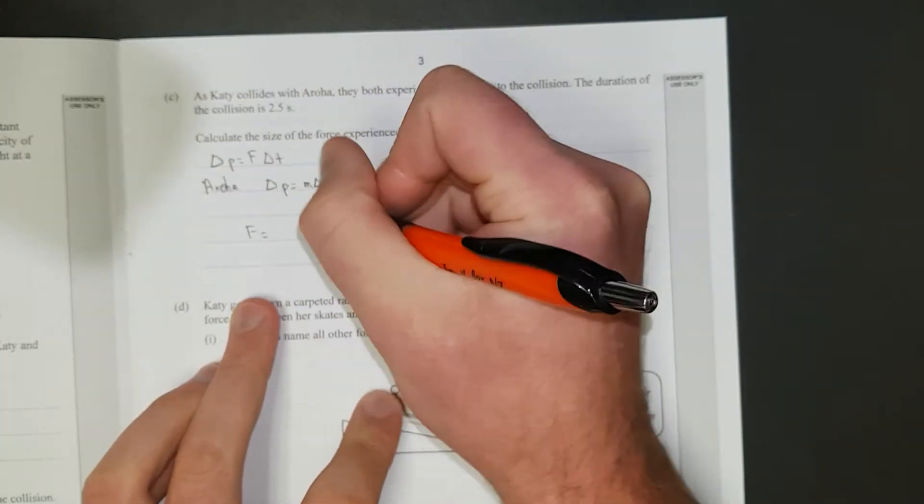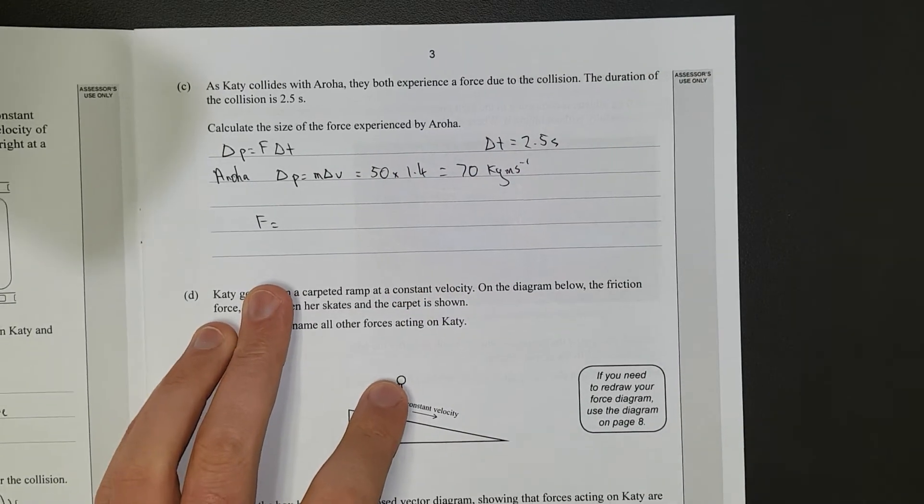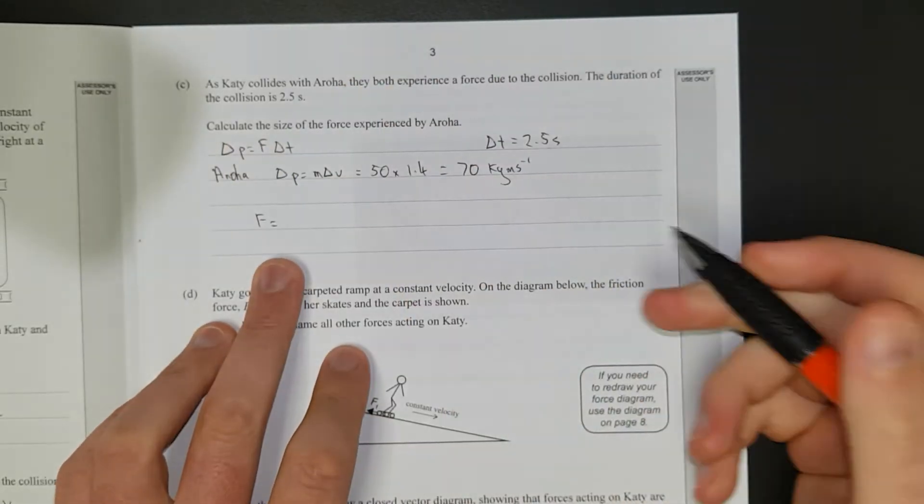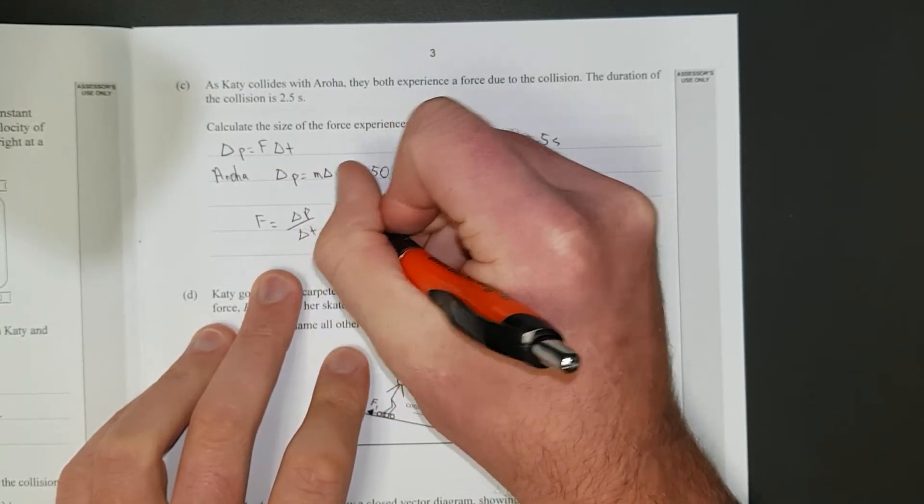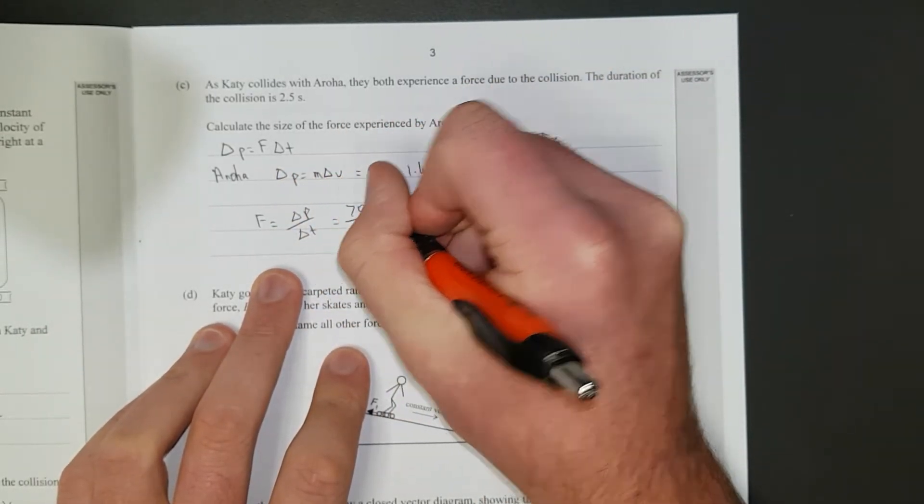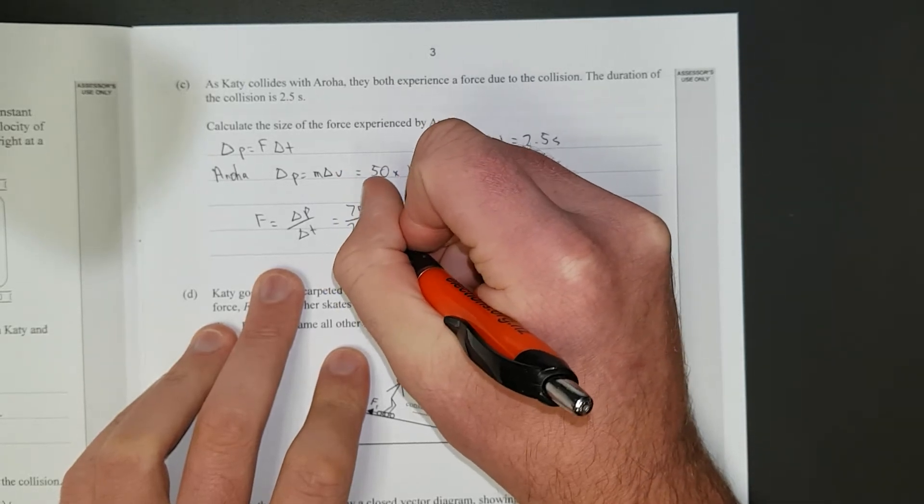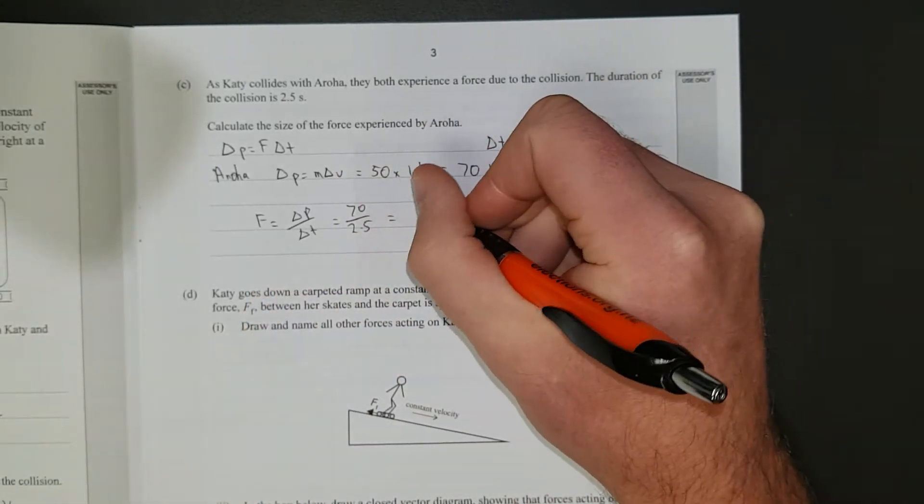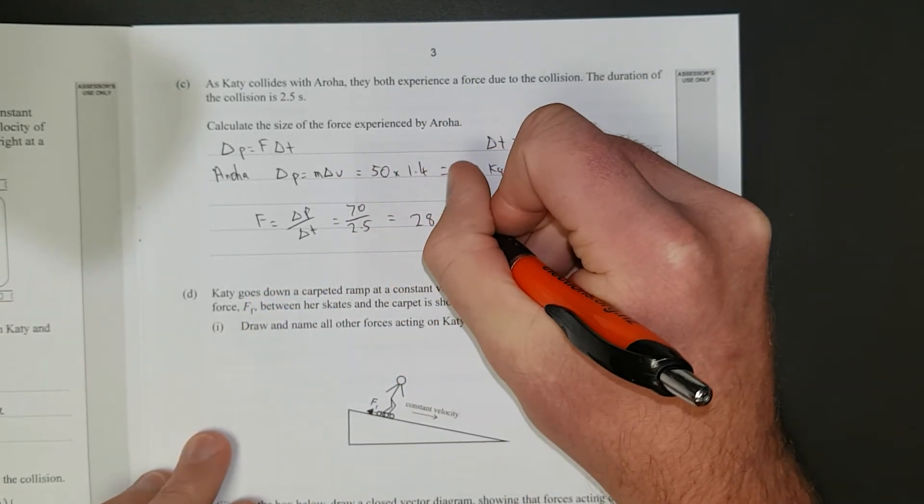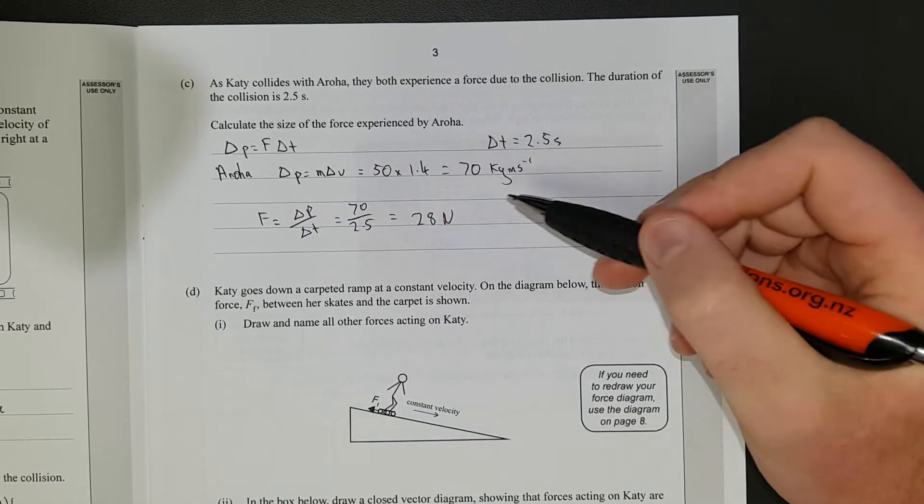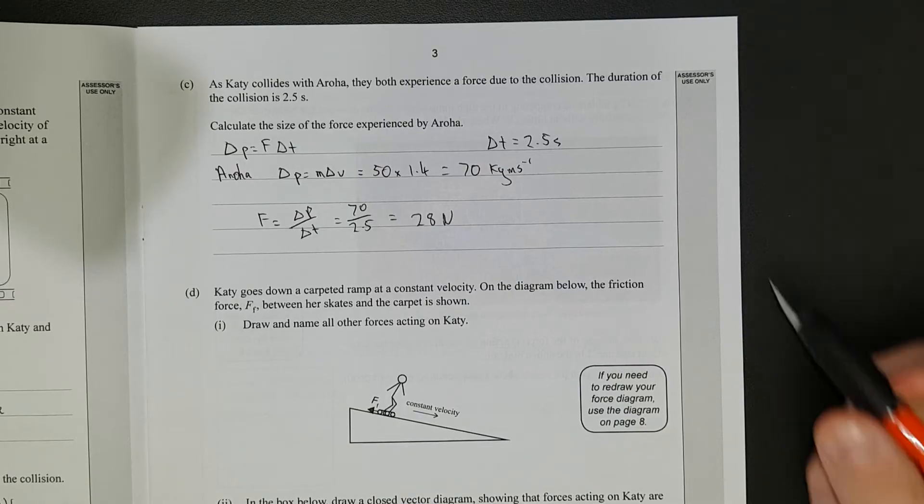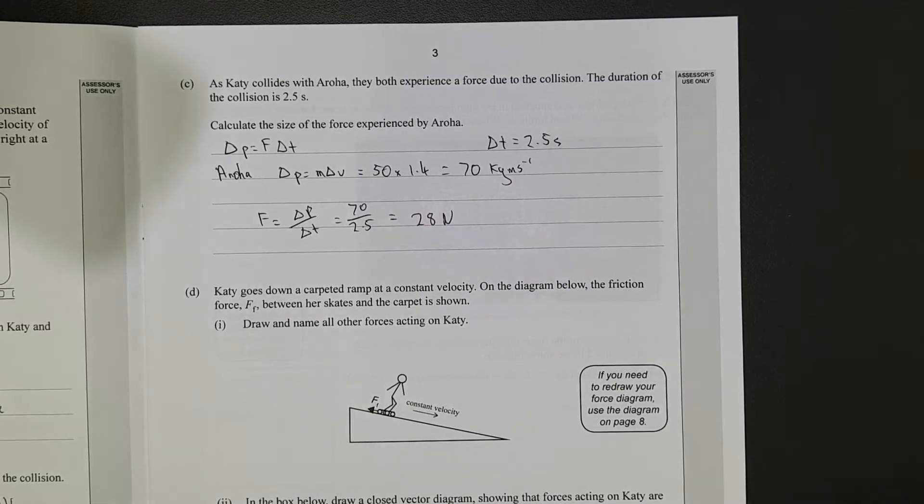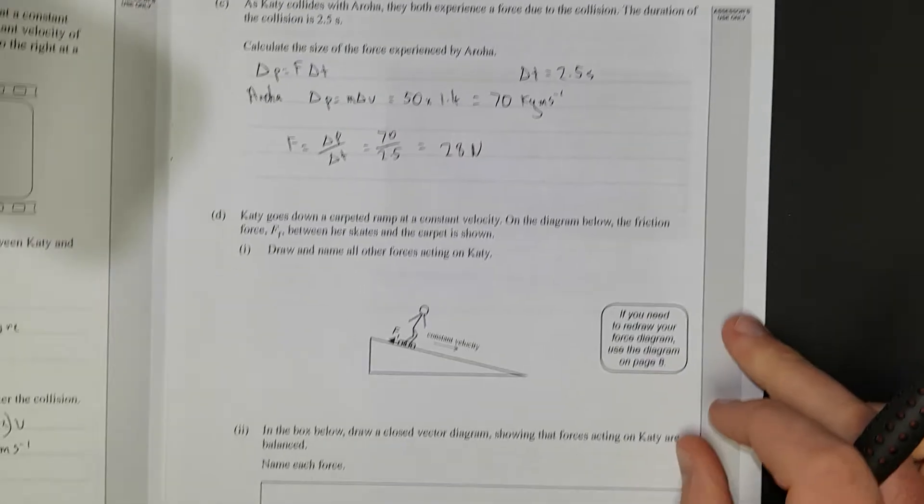So, the force is just going to be equal to change in momentum divided by change in time, which is equal to 70 divided by 2.5, which equals 28 newtons. Look at that. And just checking, that's 2 ECF. Makes sense. That's not a huge force, but that's all right. All right.